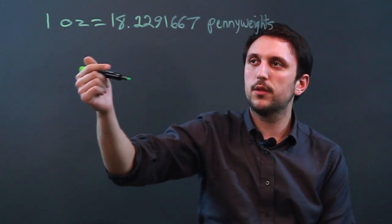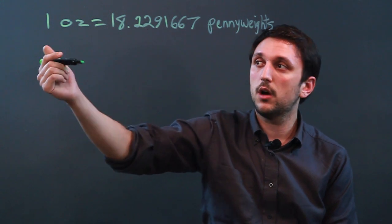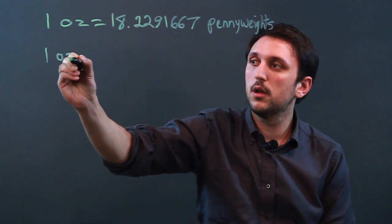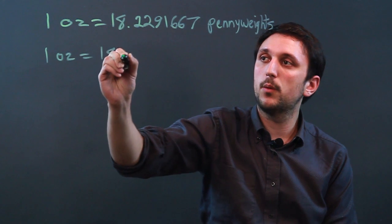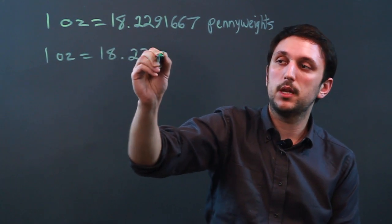So you can probably round this up if you're trying to round to the nearest hundredth. You say one ounce equals 18.23 pennyweights.